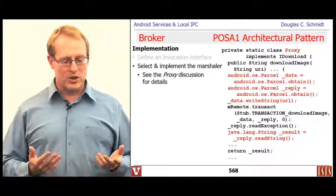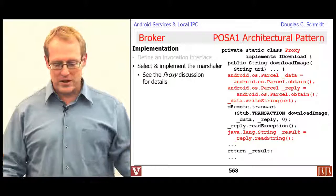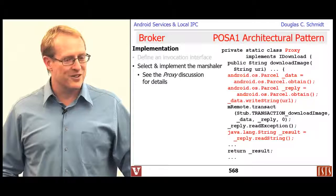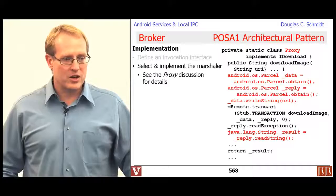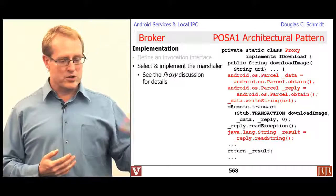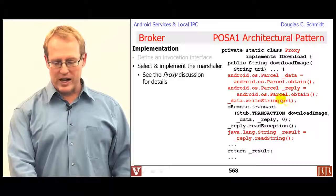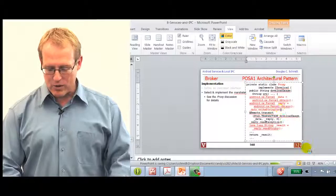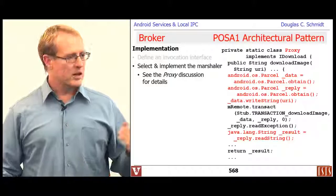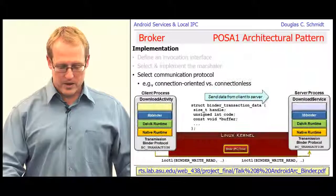In a nutshell, the AIDL compiler generates the code to do the proxy operations. It looks at the data types defined in the AIDL interface and creates the appropriate calls to lower-level Java code to marshal and demarshal things from native data types into parcels. For example, using our download image scenario, there's a writeString call that takes the URI and writes it into the parcel, which is then passed as part of the invocation with the transact method on the remote binder.